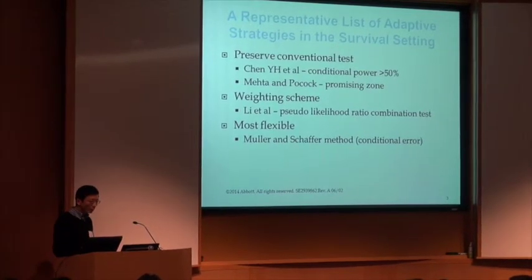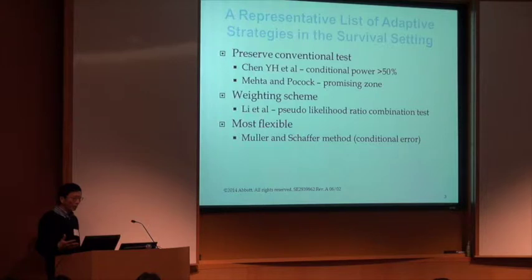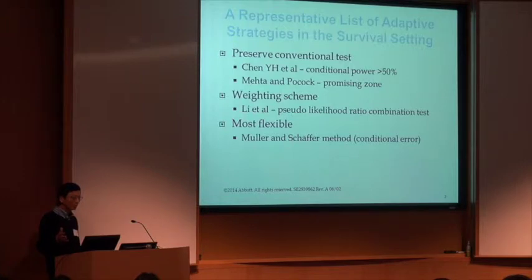Another method is by Ligang and others, based on a pseudo-likelihood ratio combination test. In statistical theory, the likelihood ratio test contains many optimality features. However, their method mimics some of the likelihood ratio test approach but is not a real likelihood ratio because of the adaptation — that's why I call it pseudo.